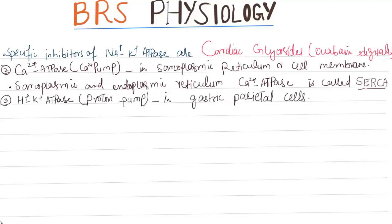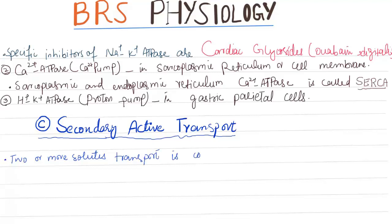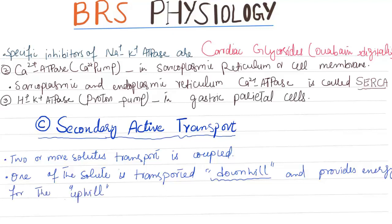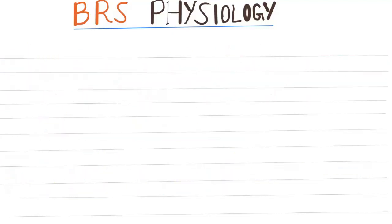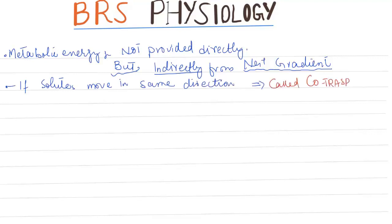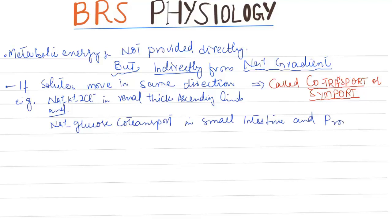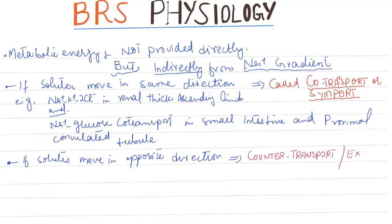The hydrogen-potassium ATPase or proton pump is found in gastric parietal cells. Secondary active transport: two or more solutes are coupled. One solute is transported downhill, providing energy for the uphill transport of the other solute. Metabolic energy is not provided directly but indirectly from the sodium gradient. If solutes move in the same direction it is called co-transport or symport, for example sodium-potassium-2-chloride in the renal thick ascending limb, and sodium-glucose co-transport in the small intestine and proximal convoluted tubule. If solutes move in opposite directions it is called counter-transport, exchange, or antiport — for example, sodium-calcium exchange or sodium-hydrogen exchange.